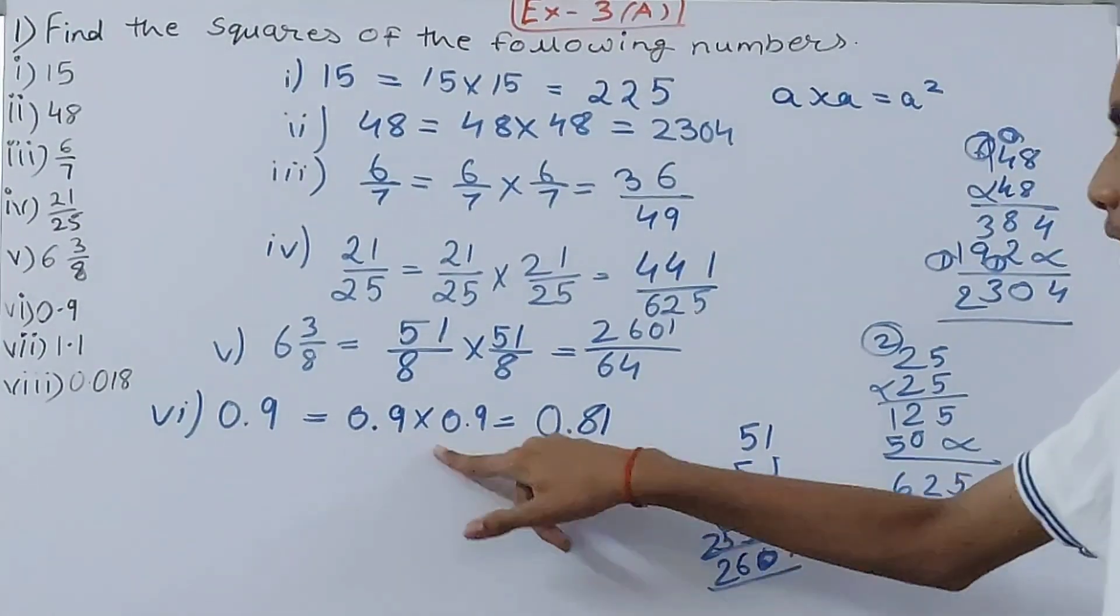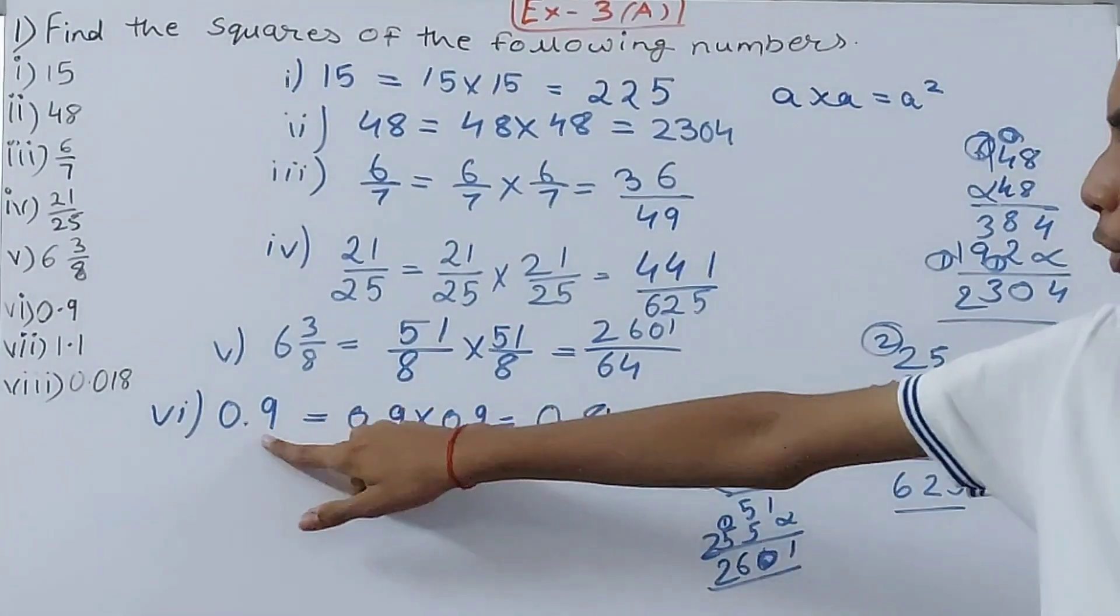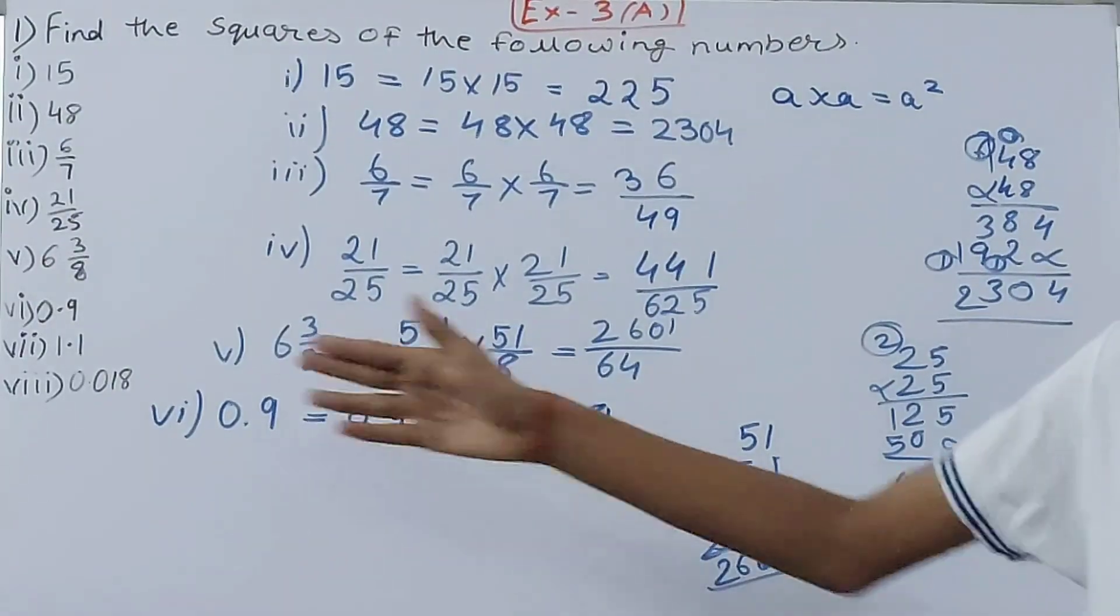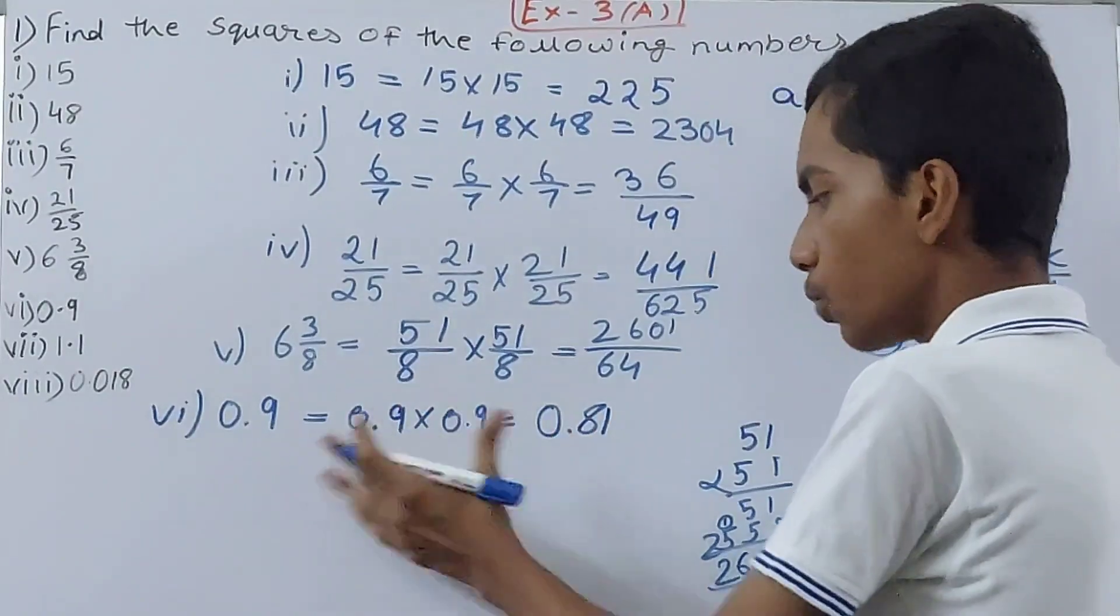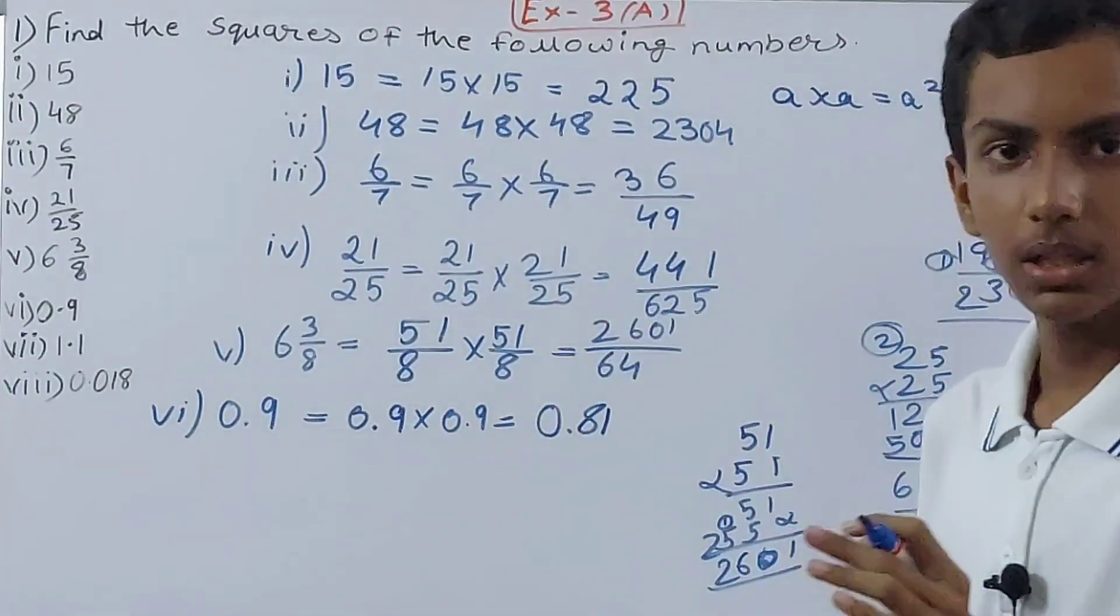So we get 0.81. You can see 0.9 and 0.81 - which is greater? 0.9 is greater, right? So that means that the square is less, or you can see smaller than the original value.